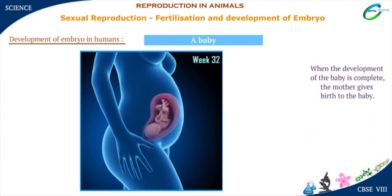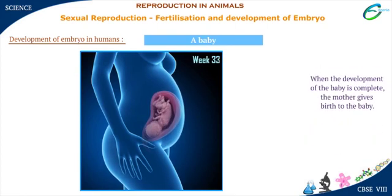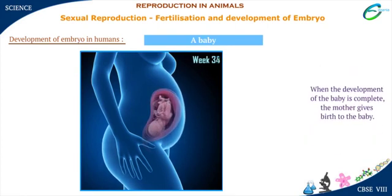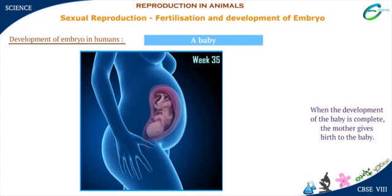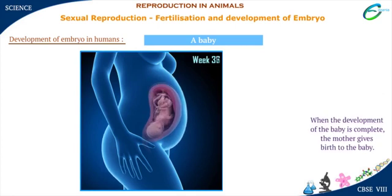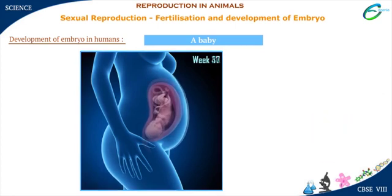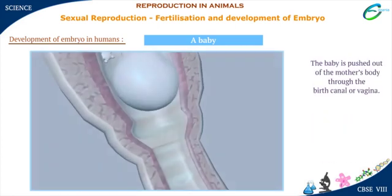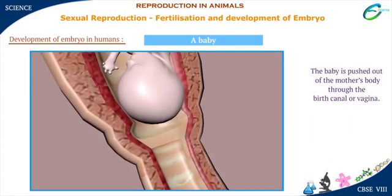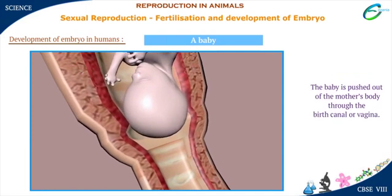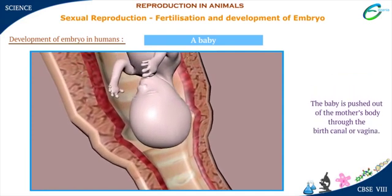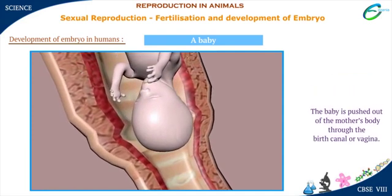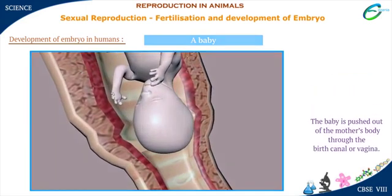It takes 9 months for the fetus to develop completely into a baby. When the development of the baby is complete, the mother gives birth to the baby. The baby is pushed out of the mother's body through the birth canal or vagina.